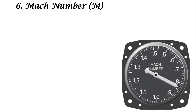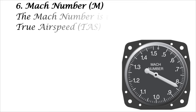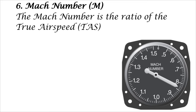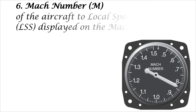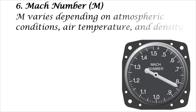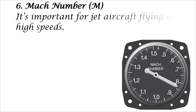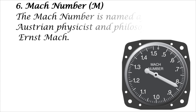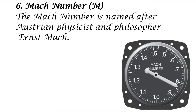Six: Mach number. The Mach number is the ratio of the true airspeed of the aircraft to the local speed of sound, LSS, displayed on the Mach meter. Mach varies depending on atmospheric conditions, air temperature, and density. It is important for jet aircraft flying at high speeds. The Mach number is named after Austrian physicist and philosopher Ernst Mach.